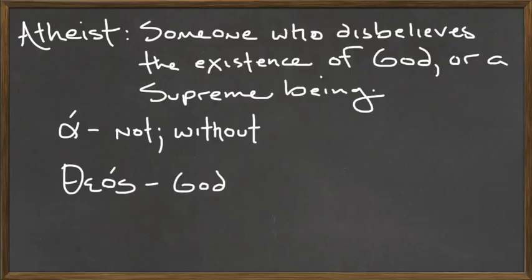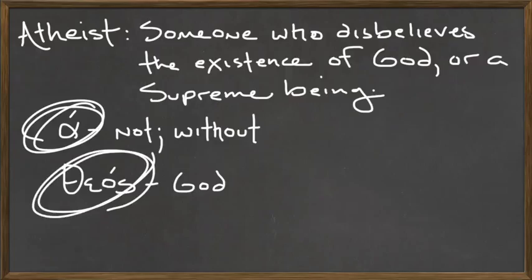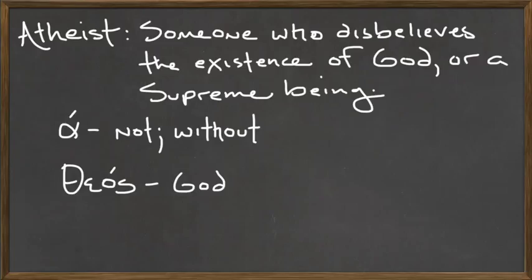It comes from a couple of Greek words. It comes from 'a', which means 'not' or 'without', and then the Greek word 'theos', which means God. Even today in modern Greek, same thing — theos means God. Combine the two and you have 'atheos', which means 'without God'. And you can easily see where we get the English word atheist — someone who doubts the existence of God.